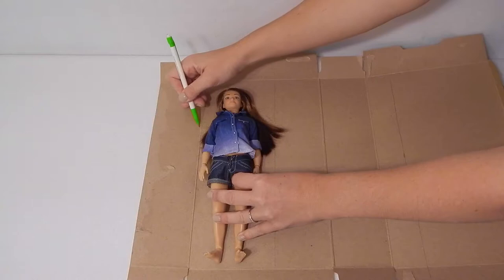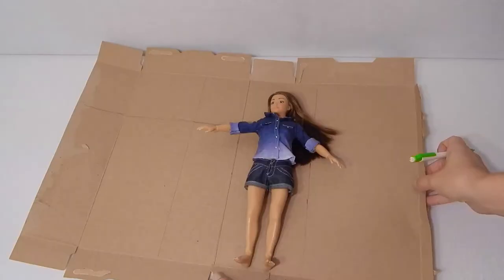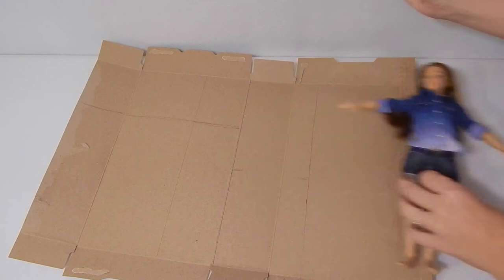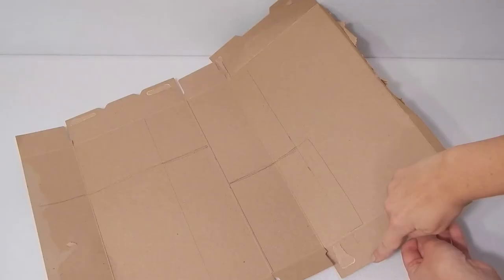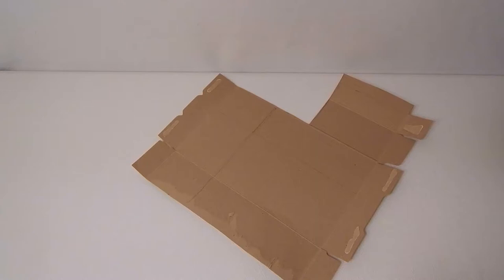Lay your doll on the back section and sketch a line at her shoulders across both sides and the back. Now place your doll on the front section and sketch a line at her hips. Draw a small tab off the side of the front section. Now cut up, across, and up so that your box looks like this.